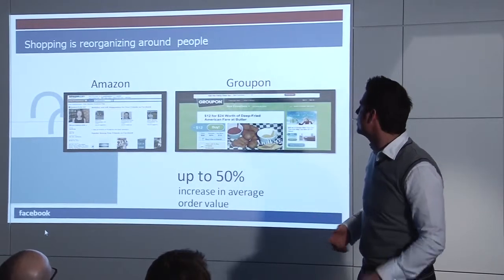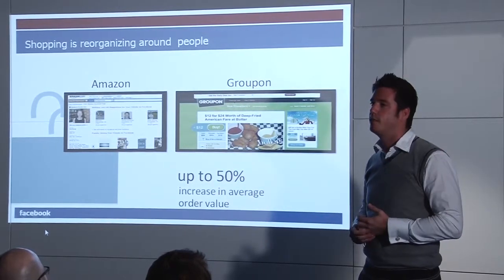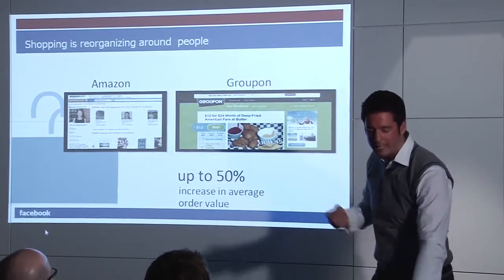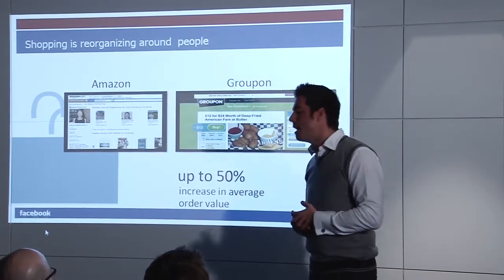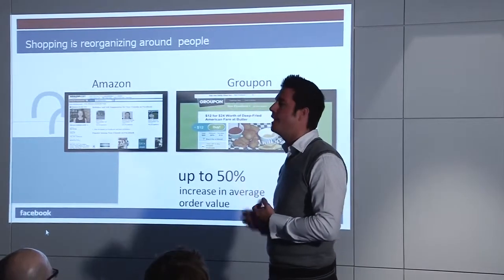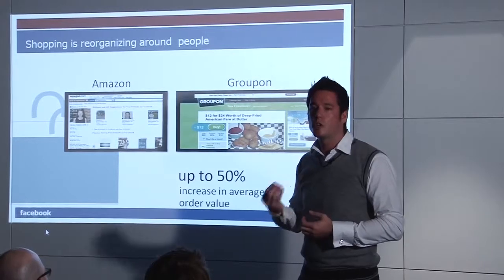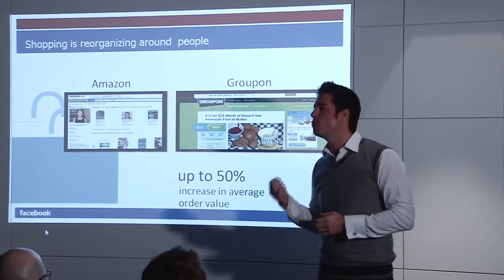Amazon and Groupon saw an increase of 50% of the order value just by including social plugins on their sites and social recommendations. The real trick was Amazon had social recommendation, but it wasn't relevant to their friends or family. So they included social plugins from Facebook, which made it that much more powerful.